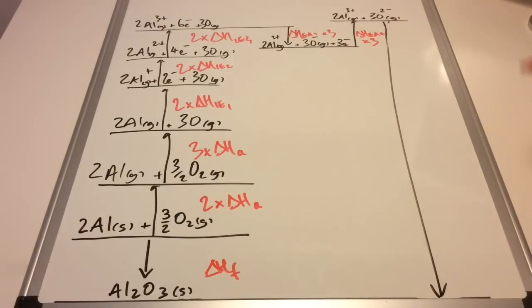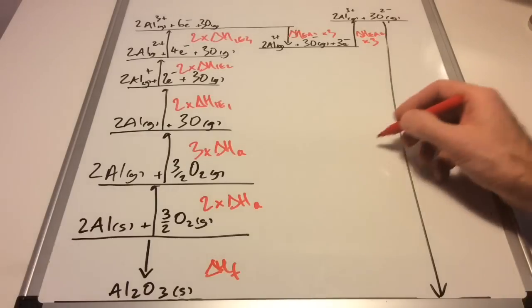The final thing is the lattice enthalpy, what we're trying to find out. We've got the two moles of 3+ gaseous aluminium ions, three moles of O²⁻ gaseous ions. Combine those together and they would give you Al₂O₃, so this is ΔH LE.